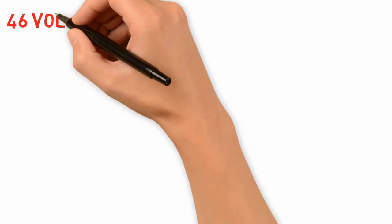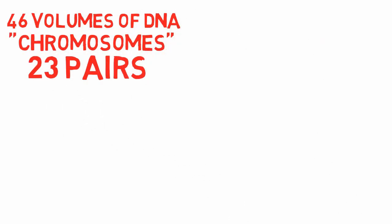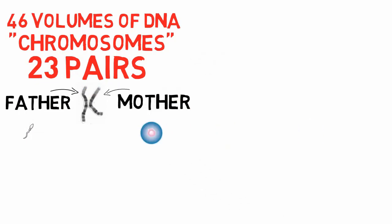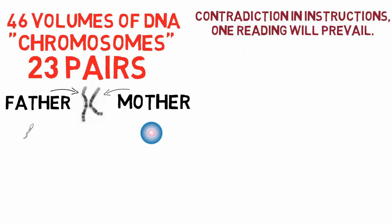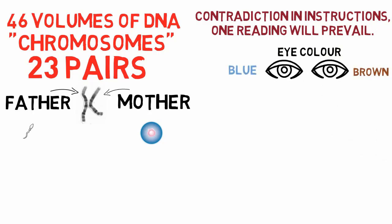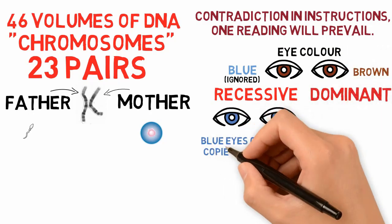Humans house 46 volumes of DNA called chromosomes, or 23 pairs. For each pair, we inherit half from the father through sperm and half from the mother through the egg. If there is a contradiction in instructions, one reading of the genes will prevail. For example, with eye color, blue eyes will be ignored and the body will manufacture brown eyes. Genes that are ignored are called recessive, and the genes for brown eyes are dominant. Blue eyes will only exist if both copies are passed on.